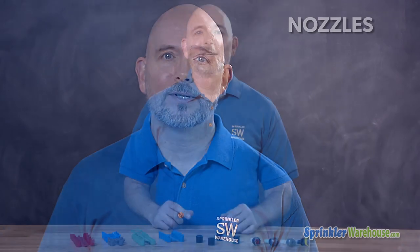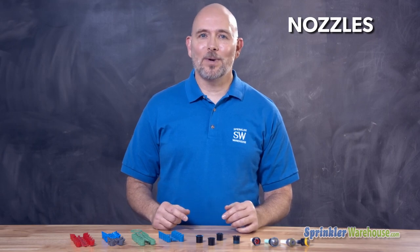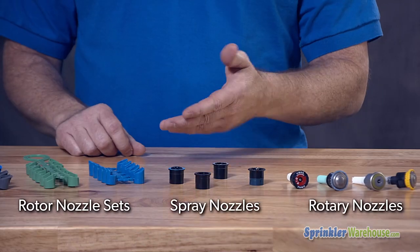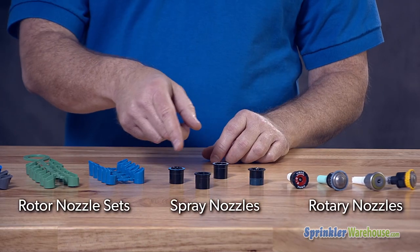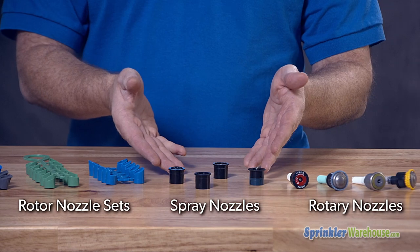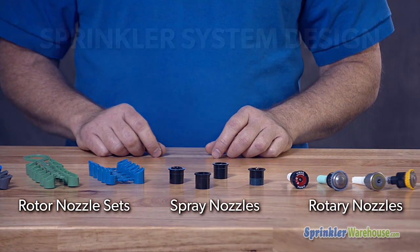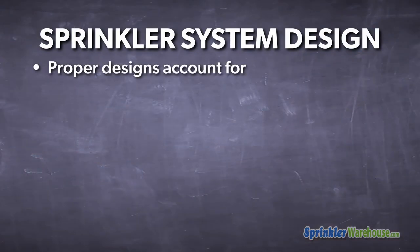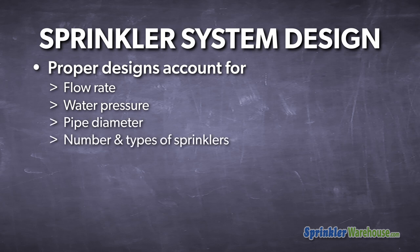Sprinklers, whether they are rotors or spray heads, limit the amount of water they throw by the use of nozzles. Nozzles come with differing gallons-per-minute ratings. That gallon-per-minute rating is not absolute — it varies by the water pressure going into the sprinkler head. When an irrigation system is designed, flow rate, water pressure, pipe diameter, the number and types of sprinkler heads, and which nozzles are installed all have to be taken into account.